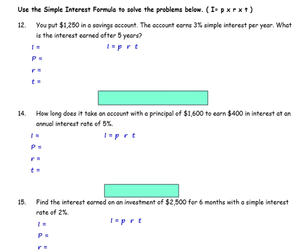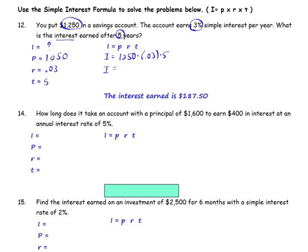Number 12: you put $1,250 in a savings account. The account earns 3% simple interest per year. What is the interest after 5 years? The time is 5 years, the interest rate is 0.03, and the principal is $1,250. The interest is what we're looking for. Substitute the values: interest equals $1,250 times 0.03 times 5. The interest earned is $187.50.